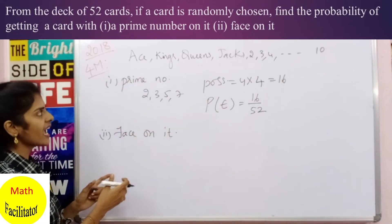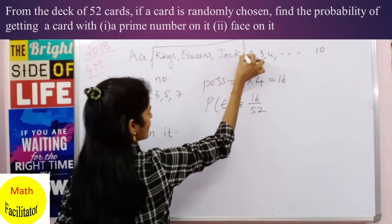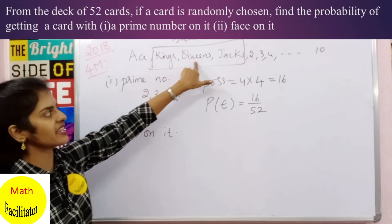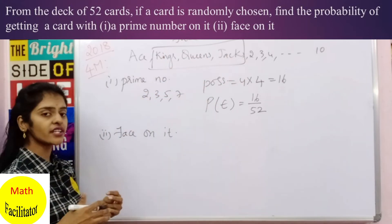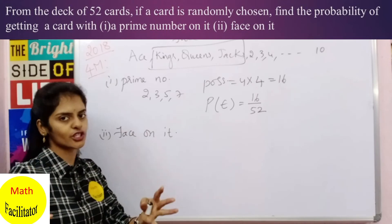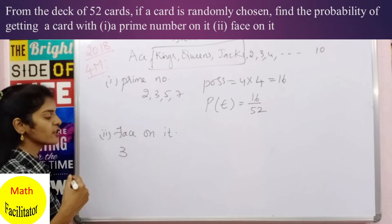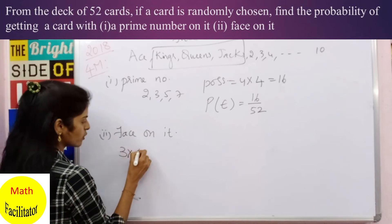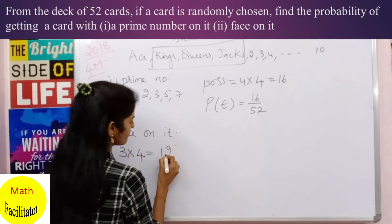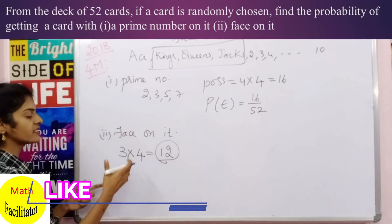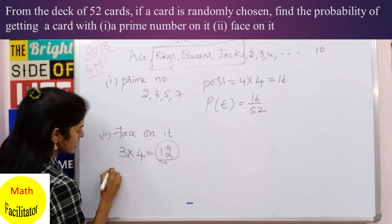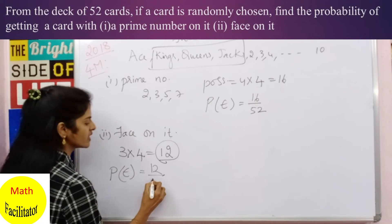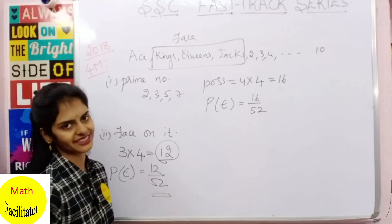Now find the probability of getting a face card. Kings, queens, and jacks are face cards — that is 3 face cards per suit. Across 4 suits, the total number of face cards is 3 × 4 = 12. So the probability of drawing a face card is 12/52, which you can simplify further.